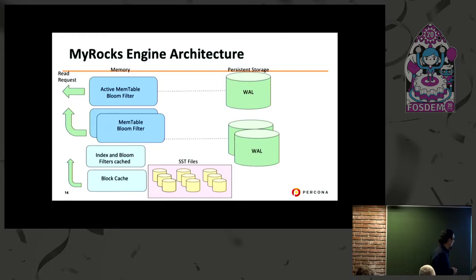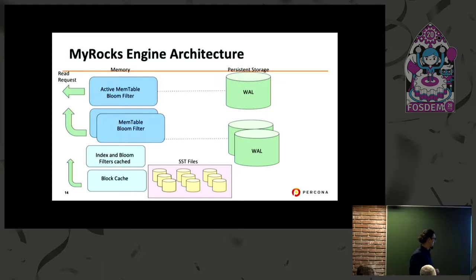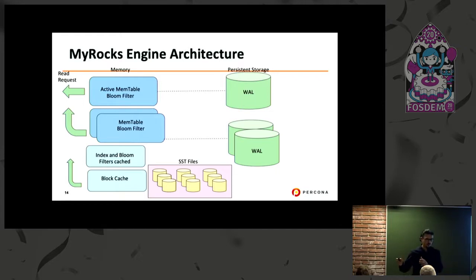The MyRocks read request works in the opposite way — trying to achieve information retrieval via memory tables, similar to the buffer pool in InnoDB. With the index and the bloom filters, you can access those leveled and compacted data files and retrieve them quickly.